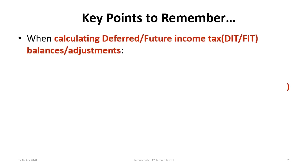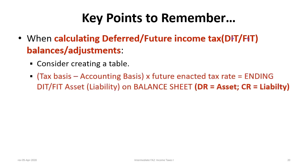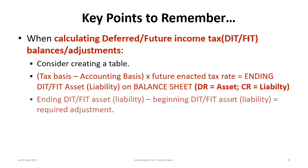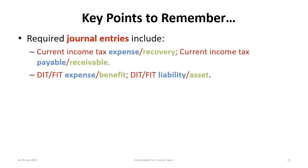When calculating deferred or future income tax balances — DIT for deferred under IFRS, FIT for future under ASPE — consider creating a table to keep everything in one spot. Take the tax basis minus the accounting basis, times the future enacted tax rate, to get the ending deferred income tax asset or liability. A debit balance is an asset; a credit balance is a liability. Subtract the beginning balance to get the required adjustment.